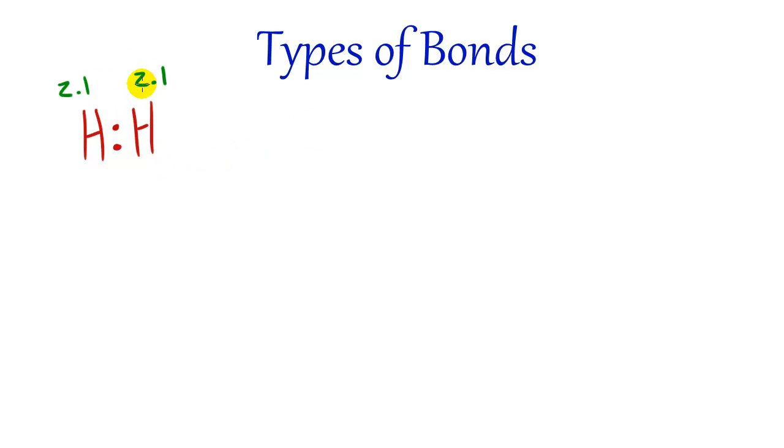So basically, depending on the electronegativity of each of these elements, if they are both the exact same, then we make something called a nonpolar covalent bond.